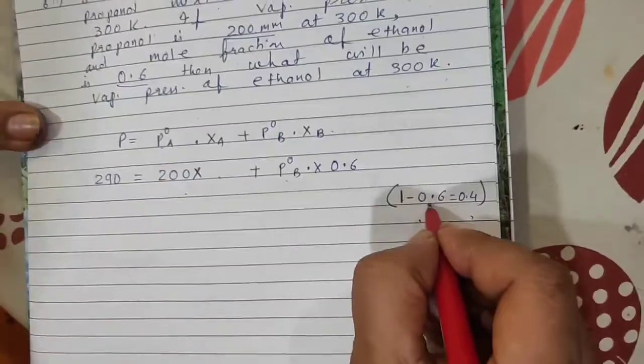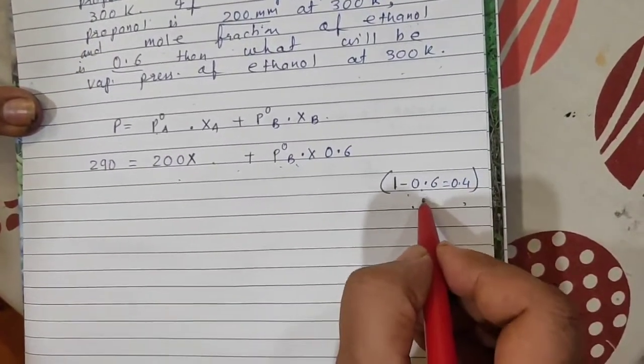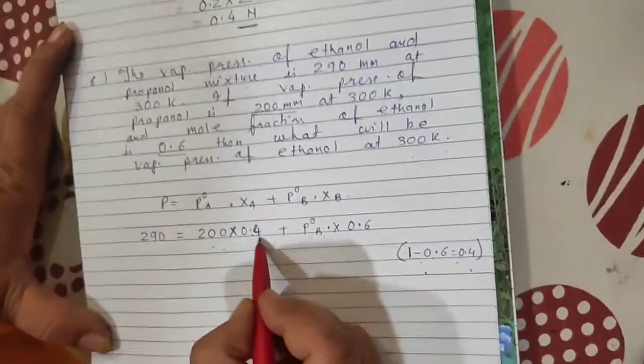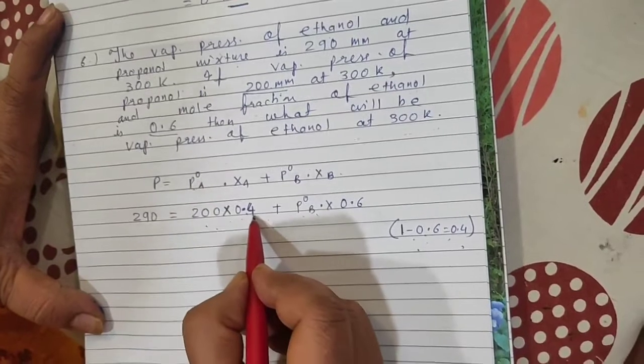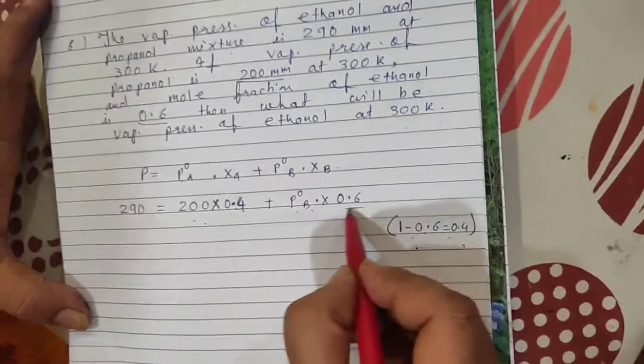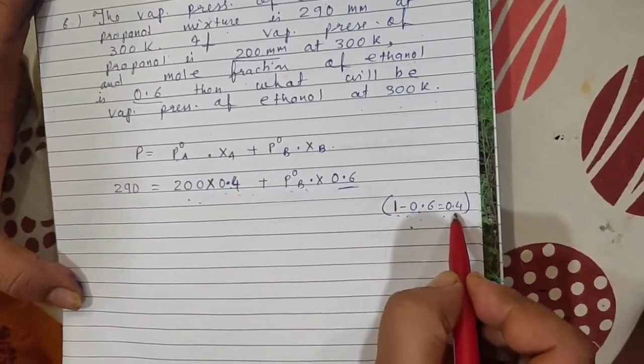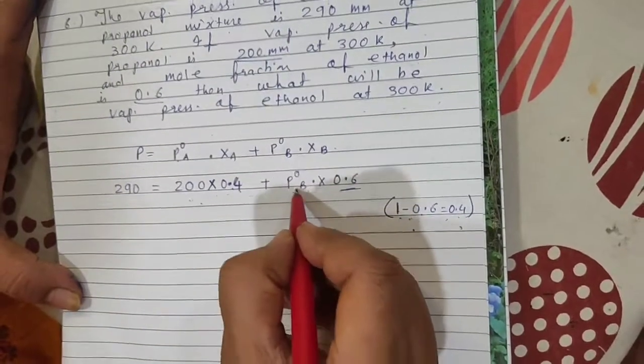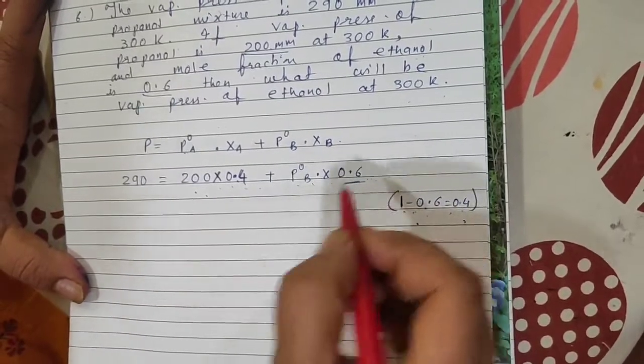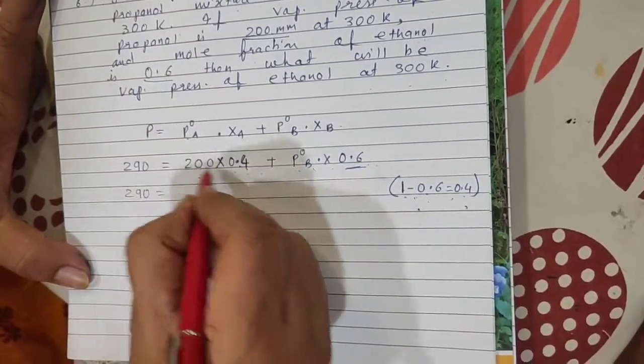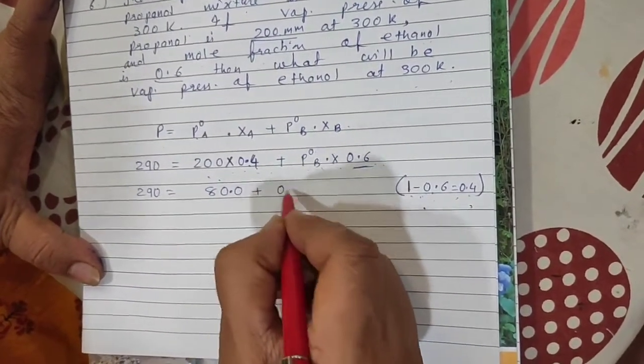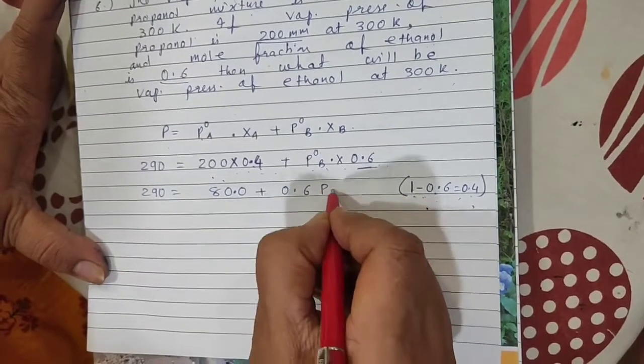P we know in this formula. P is 290 equals vapor pressure of propanol is 200 mm at 300 Kelvin, but its mole fraction is not given. Ethanol mole fraction is given as 0.6. So 1 minus 0.6 will be 0.4, the mole fraction of propanol. So 290 equals 200 into 0.4 plus Pb° into 0.6.